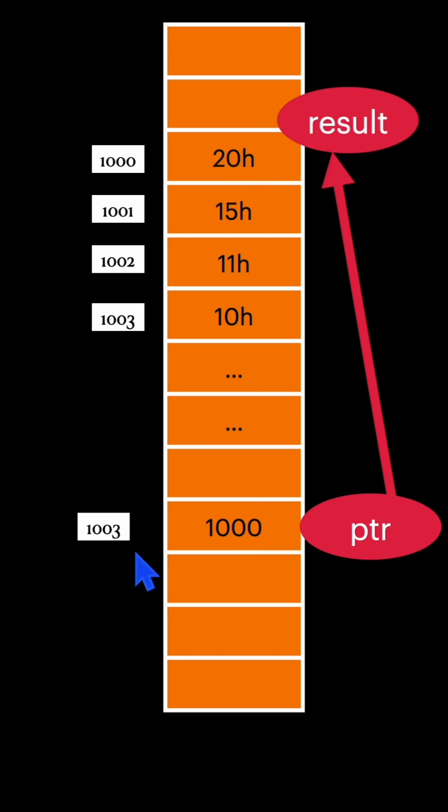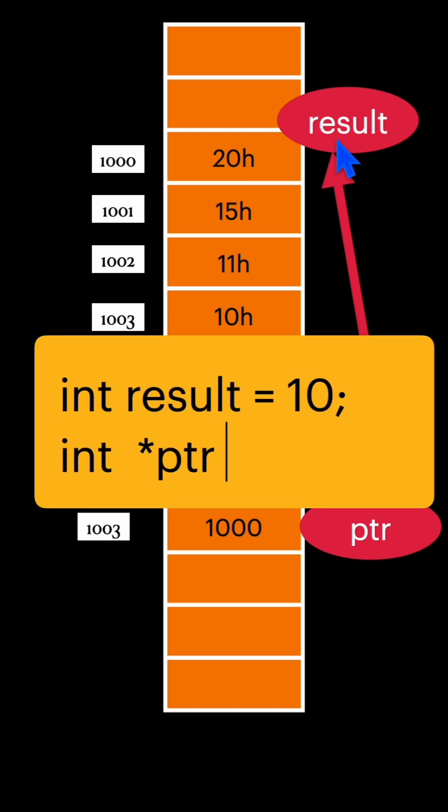Here this integer pointer contains value 1000 which is pointing to the address of this variable result. You can declare and assign the pointer like this.